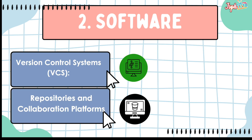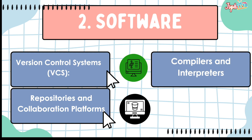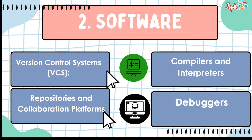We also have repositories and collaboration platforms. Examples include GitHub, GitLab, and BitBucket. Next, compilers and interpreters — tools that translate code into executable programs. While debuggers are tools to test and debug code. Examples include GDB and LLDB, as well as built-in debuggers in IDEs.